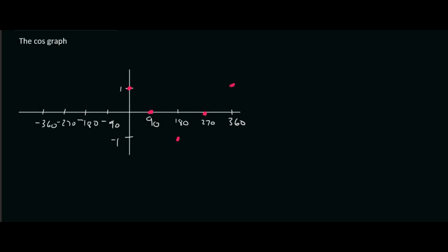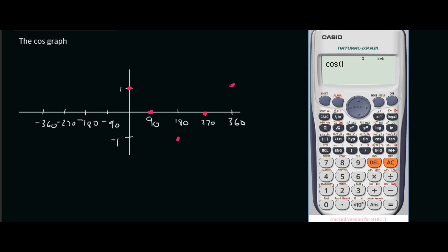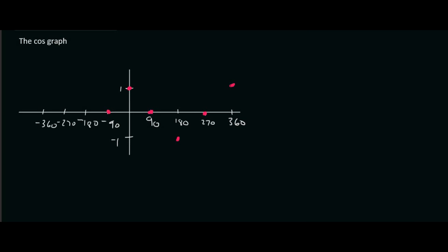then you would type in cos of minus 90. That looks like this on the calculator by the way. So you literally type in cos of minus 90 and then close the bracket and that will give you 0. And then you can type in cos of minus 180 and that's going to give us minus 1. Cos of minus 270 is 0 and then cos of minus 360 is 1.